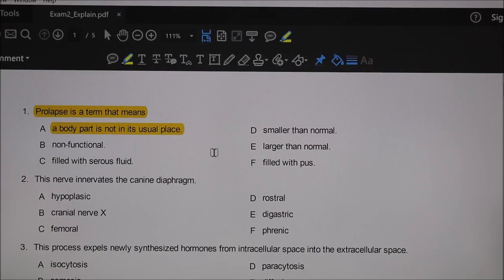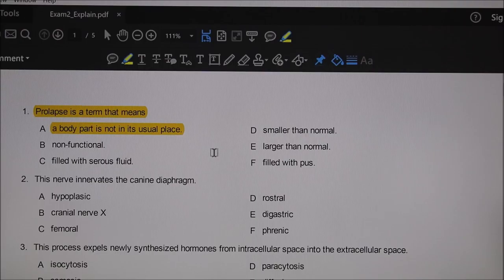Prolapse is a term that means a body part not in its usual place. If you know A is the right answer and you got the key after you left the exam, then in your notes when you're studying, take this statement out and put it in your notes written someplace.